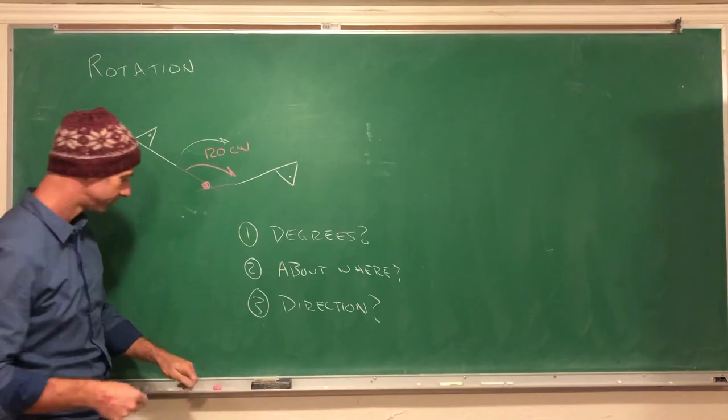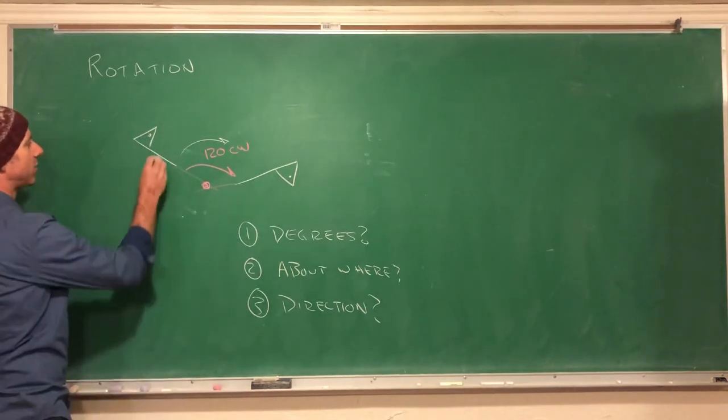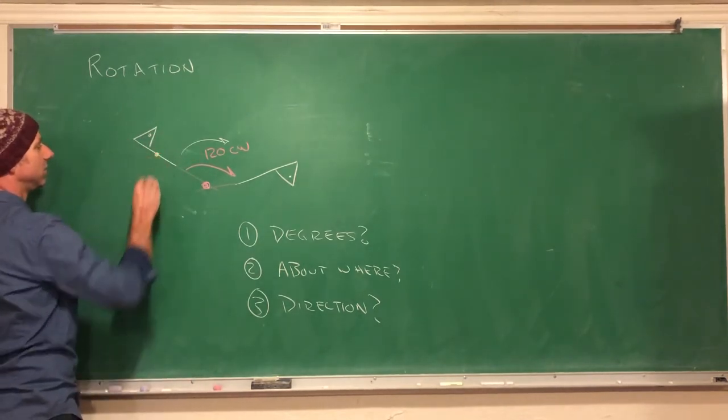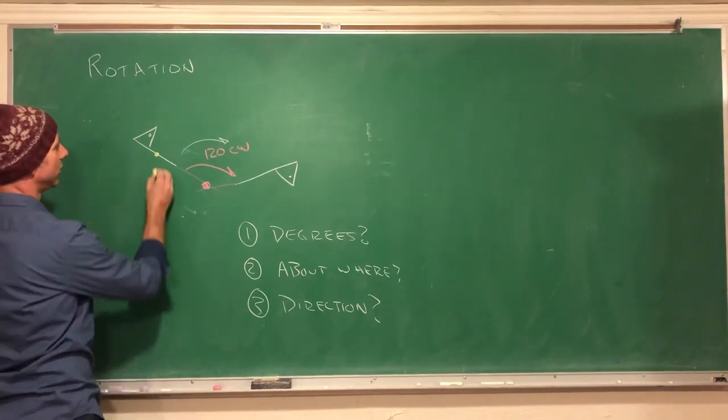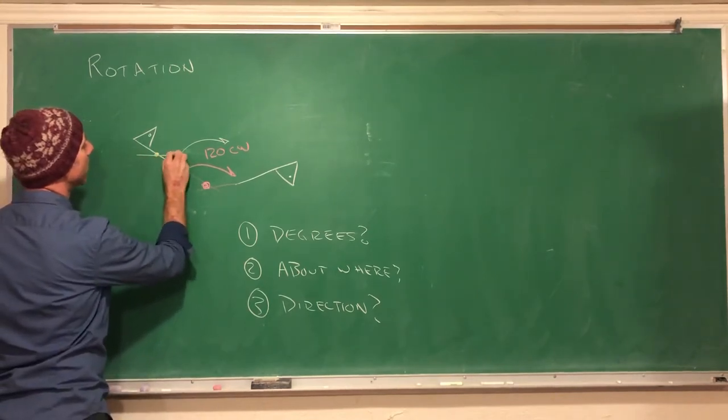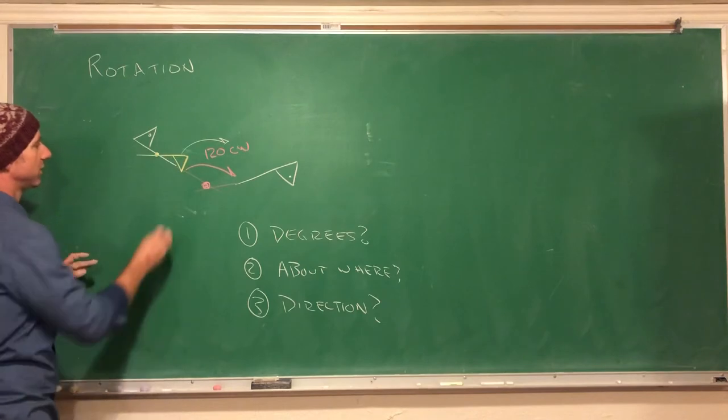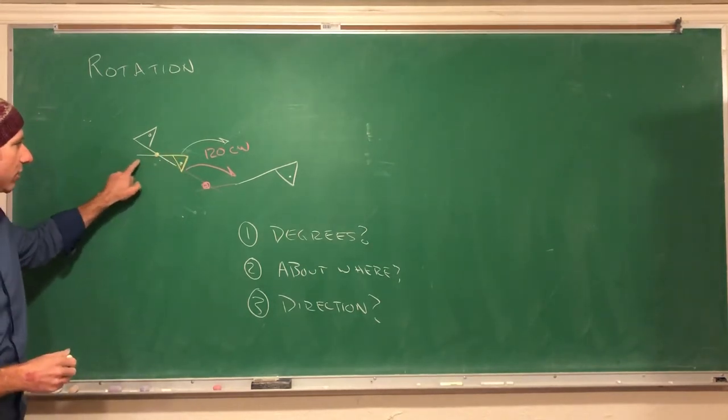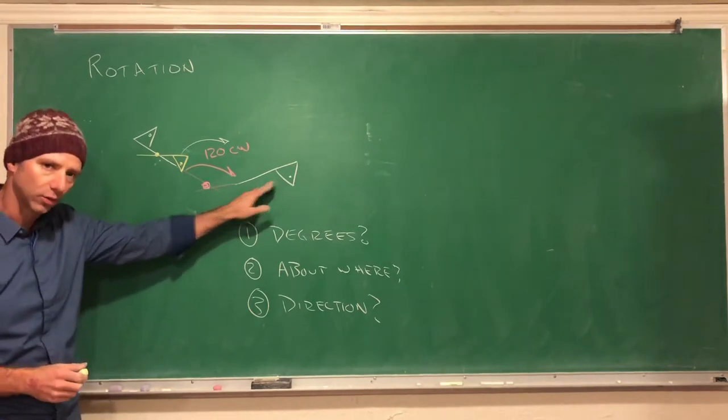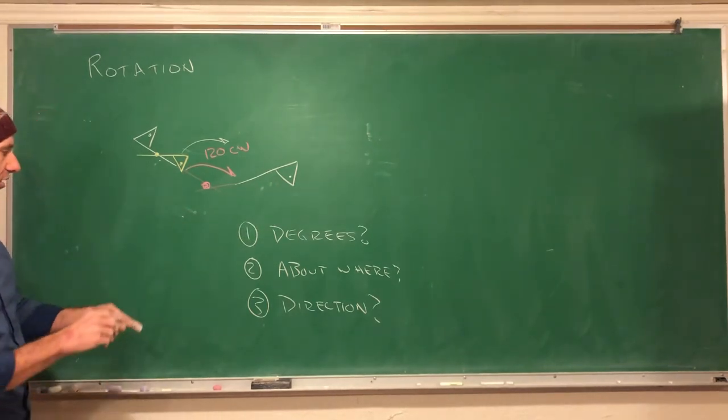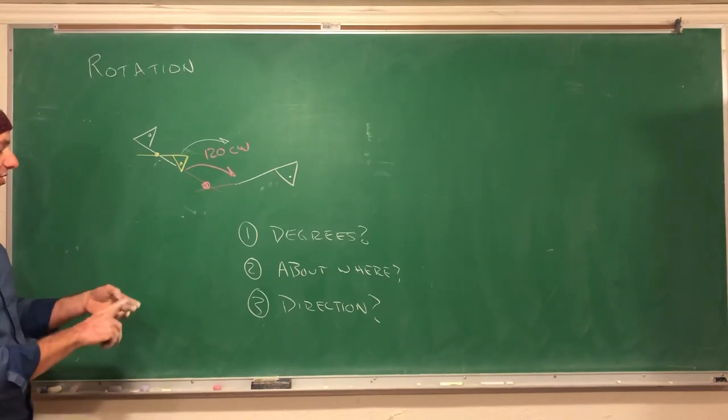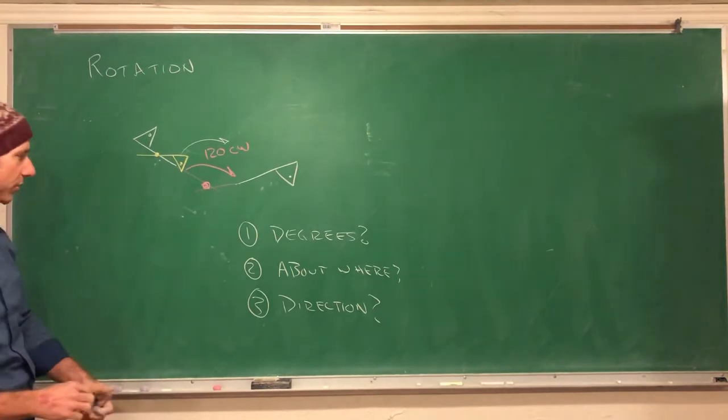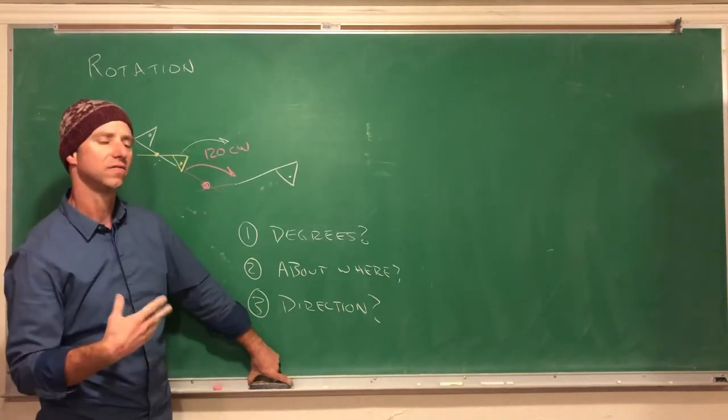What if instead I rotated about this yellow point 120 degrees? That'd be something like that instead. You can see this yellow line is clearly different than this white one. So it's important you talk about degrees, the rotation, the direction, and where - these three.